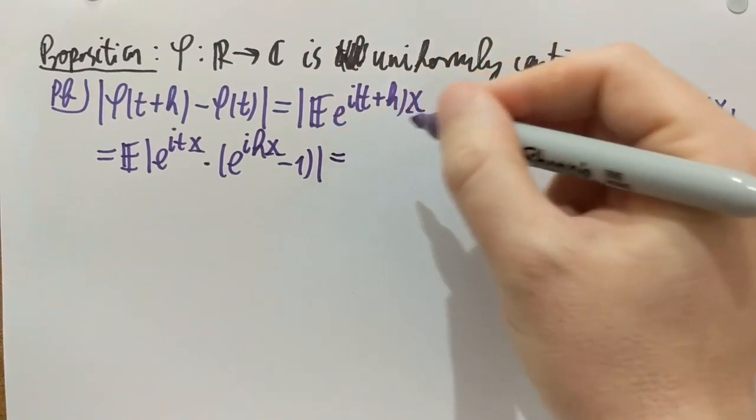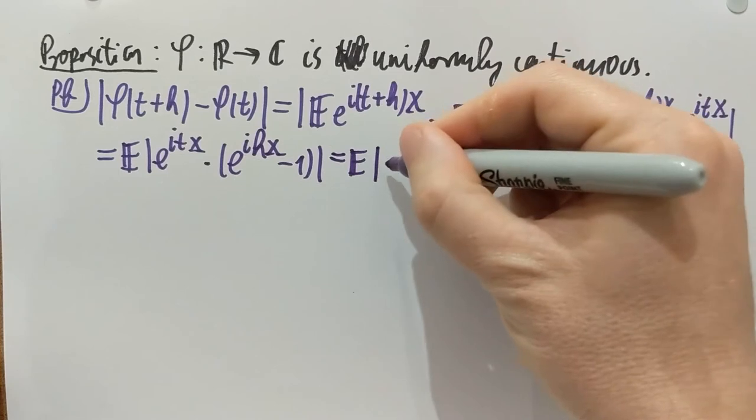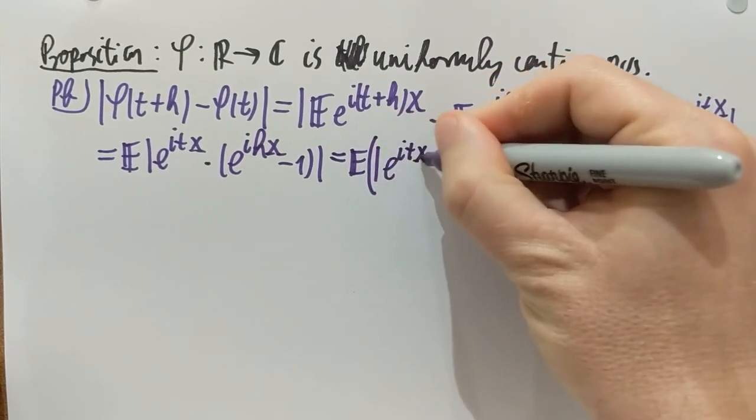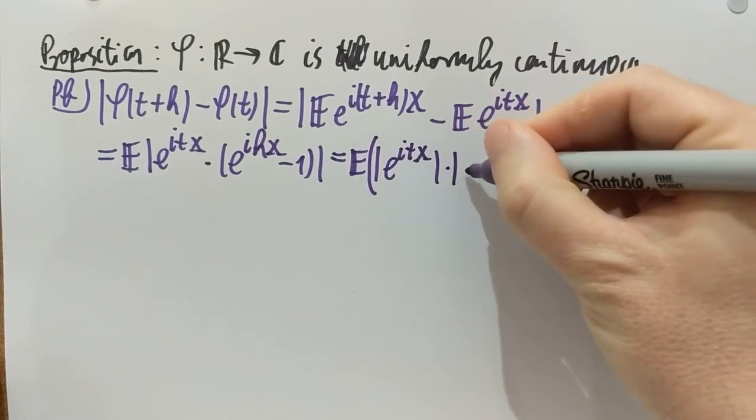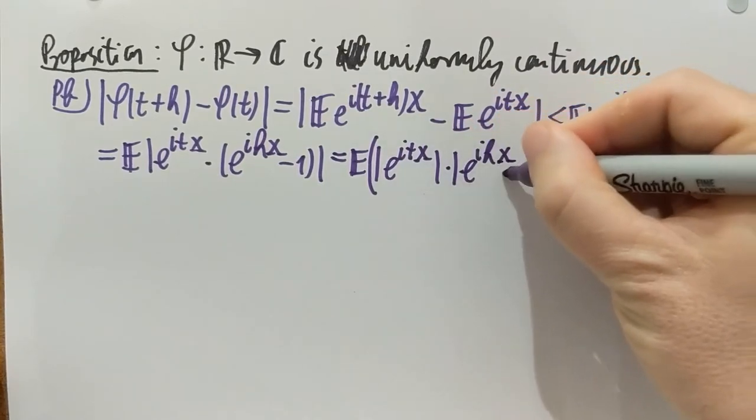Now, complex absolute value commutes with products. So, I can write expectation of e to the i·t·x mod. And then the mod of e to the i·h·x minus 1.